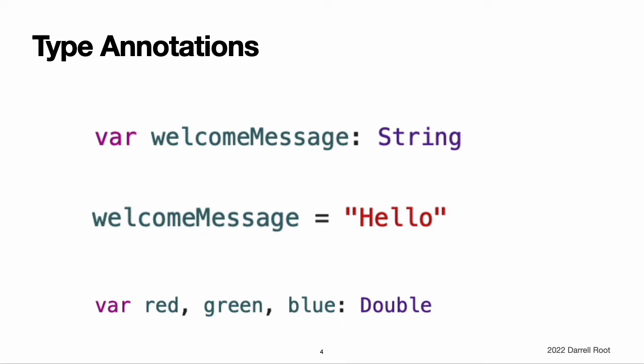It is rare that you need to write type annotations in practice. If you provide an initial value for a constant or variable at the point that it is defined, Swift can almost always infer the type to be used for that constant or variable, as described in type safety and type inference. In the welcome message example, no initial value is provided, and so the type of the welcome message variable is specified with a type annotation rather than being inferred from an initial value.